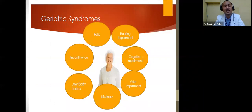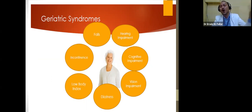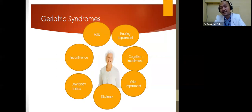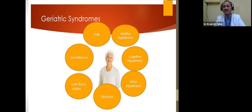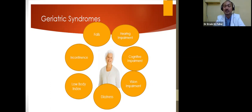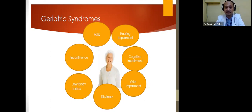Geriatric patients commonly have many complaints — knee pain, body aches, incontinence, and hearing impairment. For geriatric patients, there is naturally a declining physiological function of the body. You may observe insomnia, dizziness, and vision impairment, especially in diabetic patients because dry eyes and vision impairment are common effects. These are along with other cognitive effects.